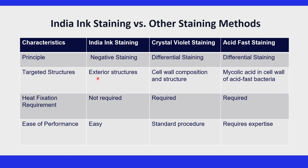India ink staining is a negative staining technique often used in conjunction with other staining procedures such as Gram staining or acid-fast staining. Unlike Gram staining and acid-fast staining, India ink staining does not require heat fixation. India ink staining does not reveal information about the microorganism's internal structure, whereas Gram staining and acid-fast staining provide internal details. India ink staining is simple with ease of use, while Gram staining is more complex involving multiple steps and heat fixation, and acid-fast staining has intermediate complexity, moderate skill requirements, and heat fixation.